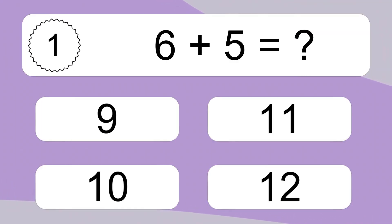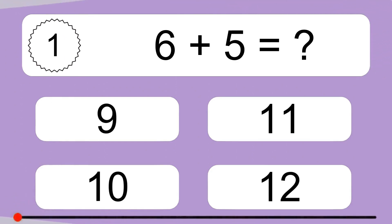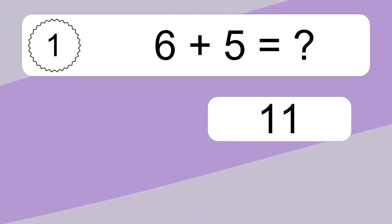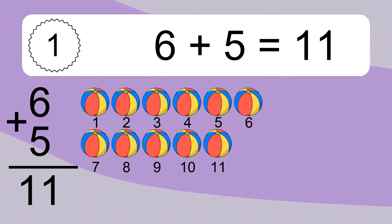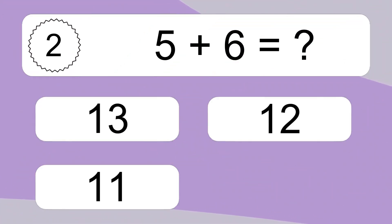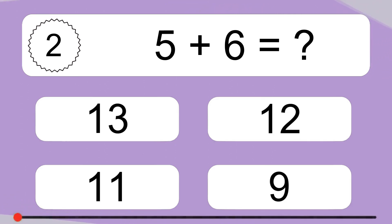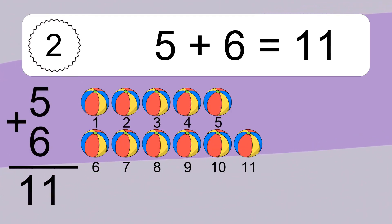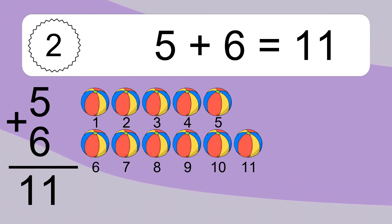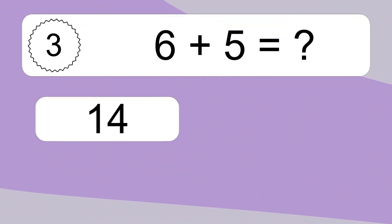6 plus 5 equals what? 1, 2, 3, 4, 5, 6, 7, 8, 9, 10, 11. 5 plus 6 equals what? 5 plus 6 equals 11. Let's count it. 1, 2, 3, 4, 5, 6, 7, 8, 9, 10, 11. 6 plus 5 equals what?